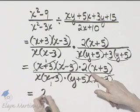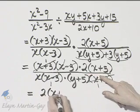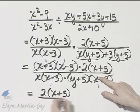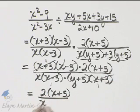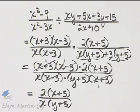In the numerator, I have 2 times x plus 5, and in the denominator, I have x times y plus 5. There is my result in simplest form.